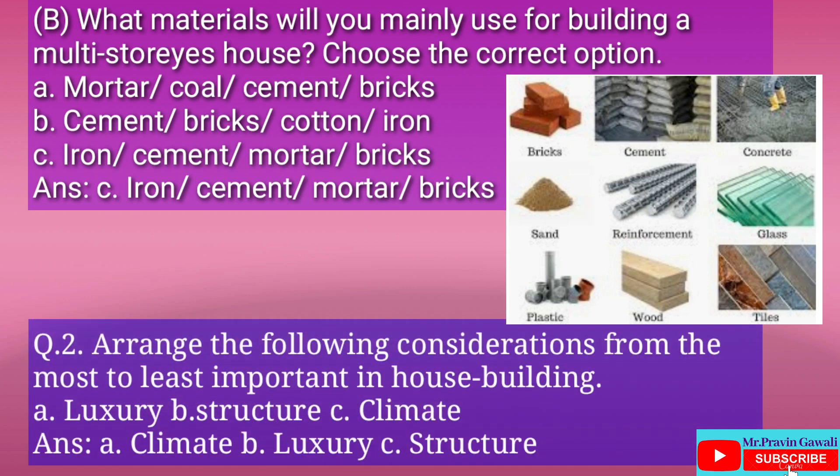Question number two: Arrange the following considerations from the most to the least important in house building. A: Luxury. B: Structure. C: Climate. The answer is A: Climate, B: Luxury, and C: Structure.